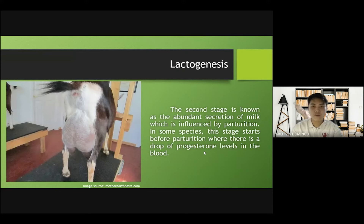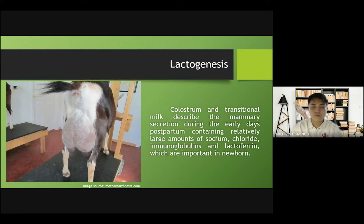The second stage is known as the abundant secretion of milk, which is influenced by parturition. In some species, this stage starts before parturition, where there is a drop of progesterone levels in the blood. Colostrum and transitional milk describe the mammary secretion during the early days postpartum, containing relatively large amounts of sodium, chloride, immunoglobulins, and lactoferrin, which are important in a newborn.